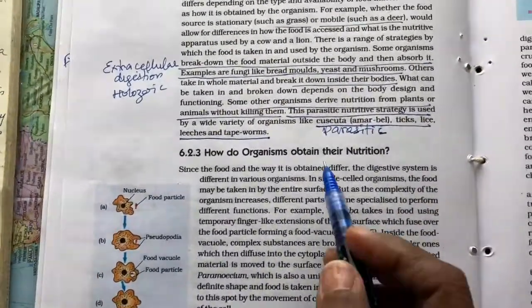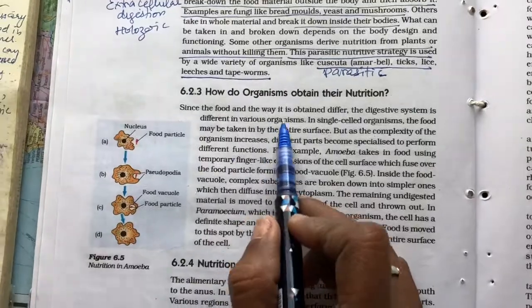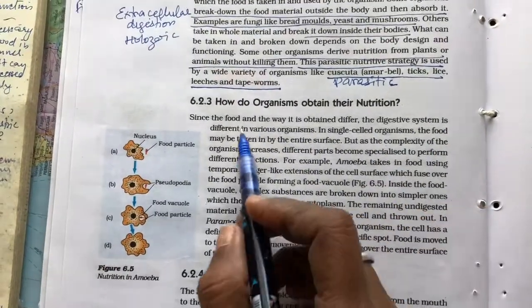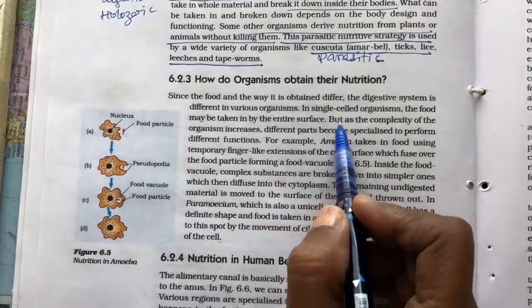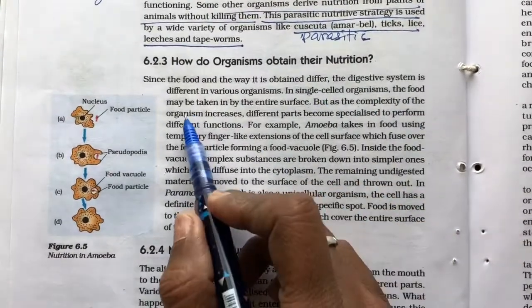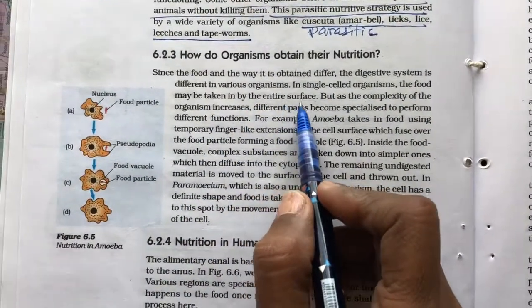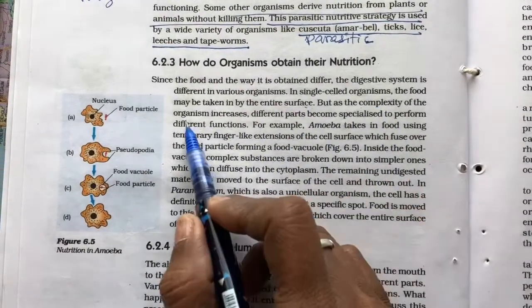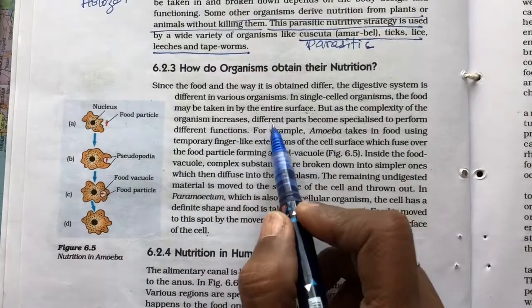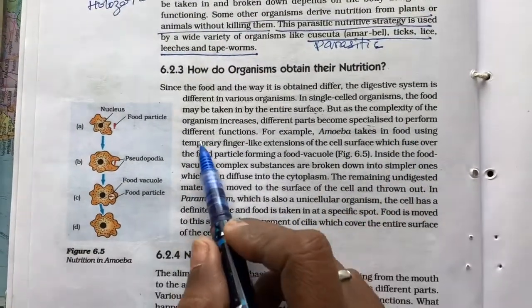How do organisms obtain their nutrition? Since the food and the way it is obtained differ, the digestive system is different in various organisms. In single celled organisms, the food may be taken in by the entire surface. But as the complexity of the organism increases, different parts become specialized to perform different functions.